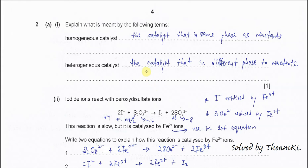Question 2a, part 1: explain what is meant by the following terms. A homogeneous catalyst is the catalyst that is in the same phase as the reactants. We always refer to the reactants — when the catalyst is in the same phase as the reactants, we call this a homogeneous catalyst.